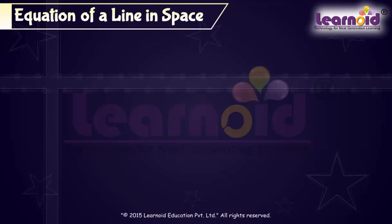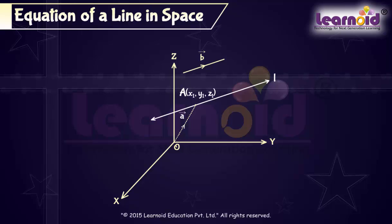Let us now find out the equation of line in the Cartesian form. Let the coordinates of the given point A be (x1, y1, z1) and the direction ratios of the given line are a, b, c.